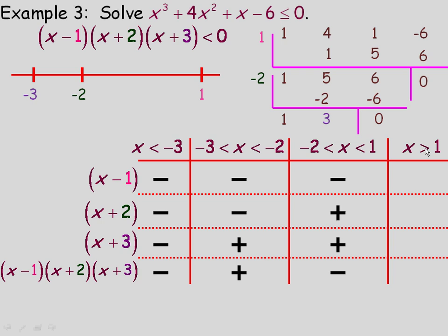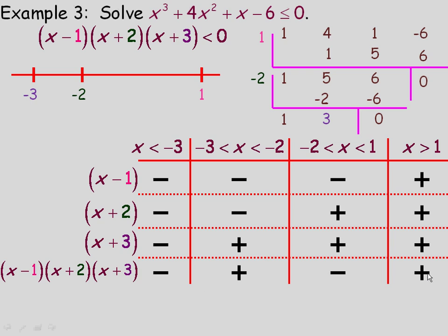For any number greater than 1: greater than 1 minus 1 is positive, greater than 1 plus 2 is also positive, and greater than 1 plus 3 is also positive. So all three factors are positive, and the product of three positives is positive. Notice the signs alternate: negative, positive, negative, positive — you'll often find this pattern unless you have double roots.